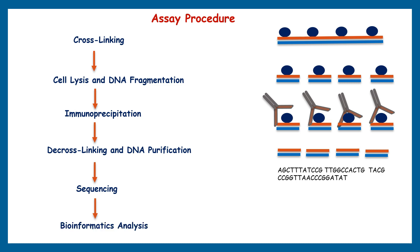Using bioinformatics, the sequenced DNA reads are aligned to a reference genome to identify their specific locations. By analyzing the distribution of these sequences across the genome, we can determine the regions where the protein of interest was bound before cross-linking. ChIP sequencing is a powerful molecular biology technique used to study protein-DNA interactions on a genome-wide scale.